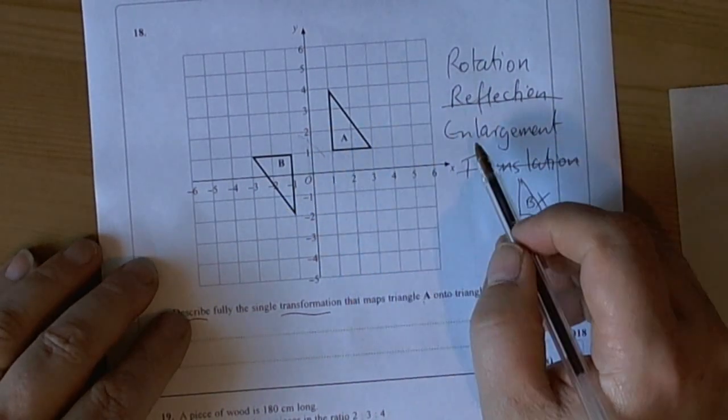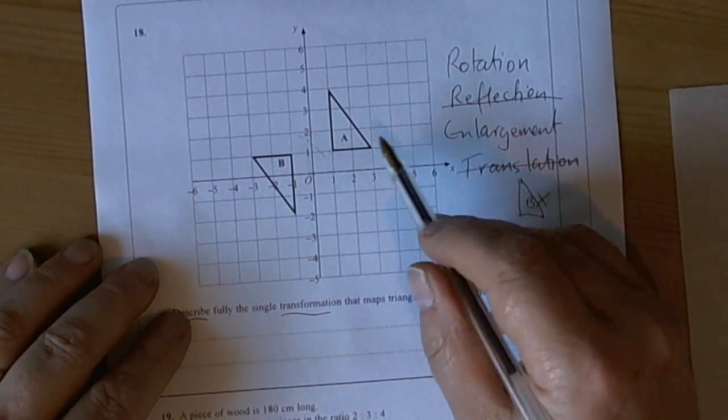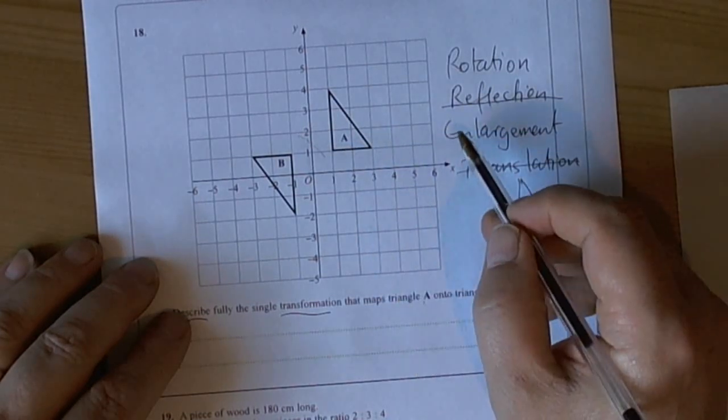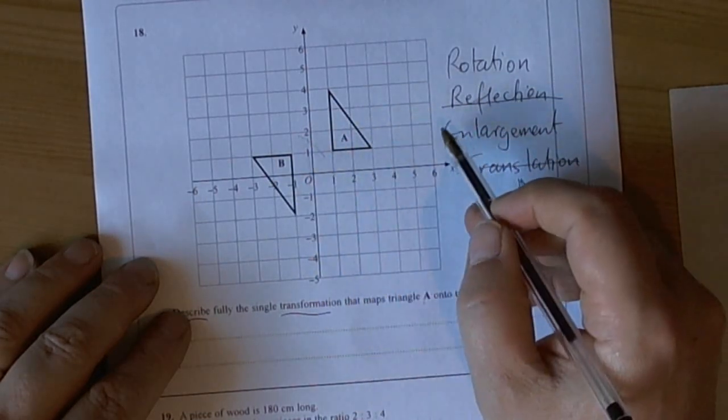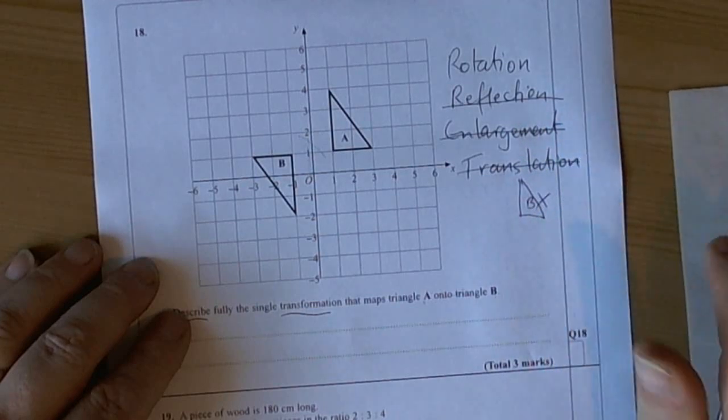Now it's very unusual for enlargements to be not the shape being bigger or smaller. So it doesn't look as though it's an enlargement at all. So we're left with rotation.